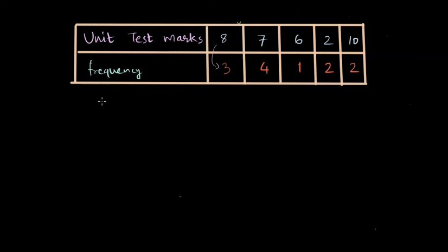In this case, if we wanted to calculate the mean marks, what we will do is multiply that test score by the frequency of it and sum all such cases. So 8 times 3 plus 7 times 4 plus 6 times 1 plus 2 times 2 plus 10 times 2.